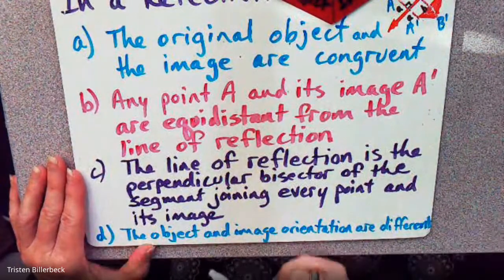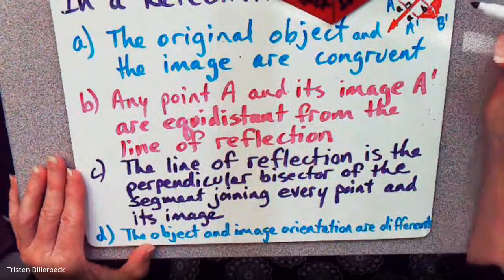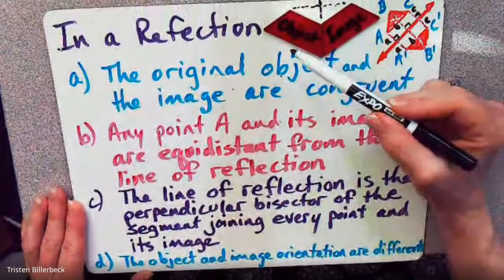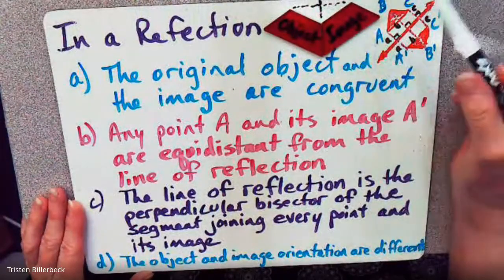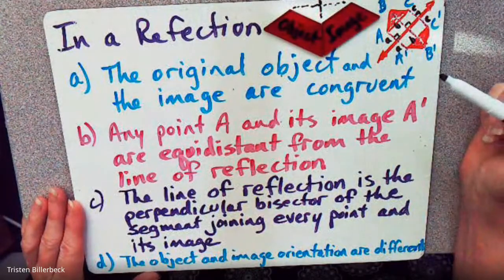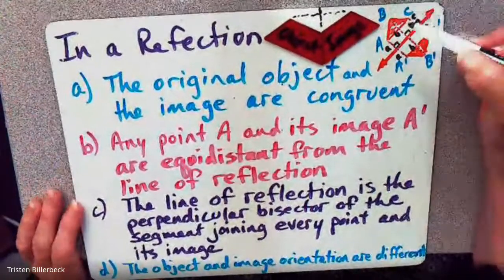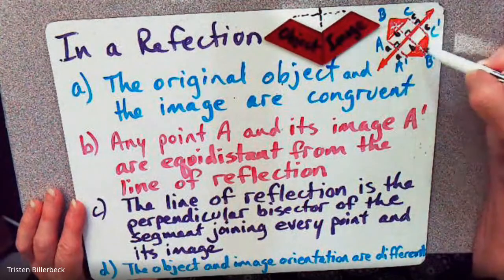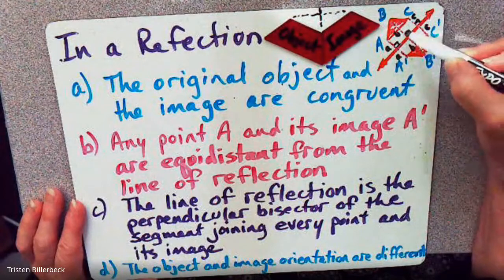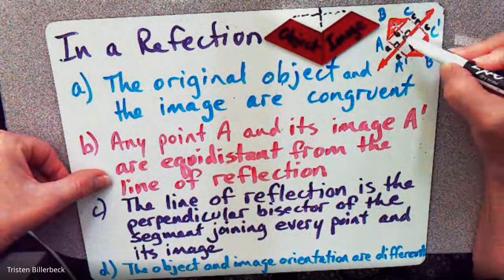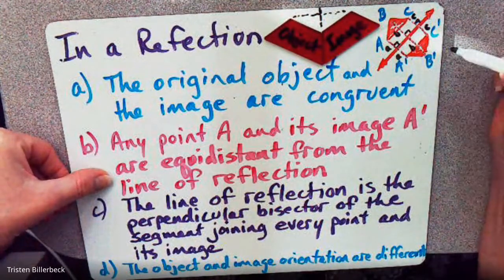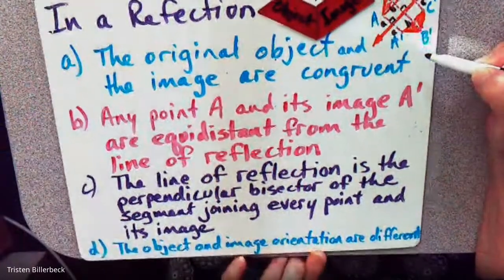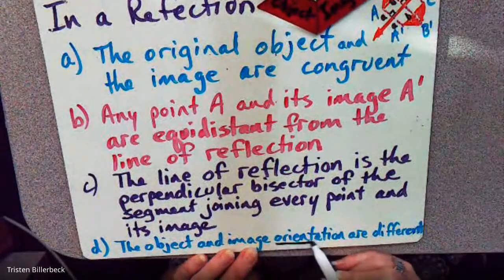The object and the image orientation are different. See how this object has a different orientation than the reflected image. It's still the same object — it's just a different orientation. So to summarize: the line of reflection is a perpendicular bisector, the points are equidistant from the line of reflection, and the image and object are congruent.